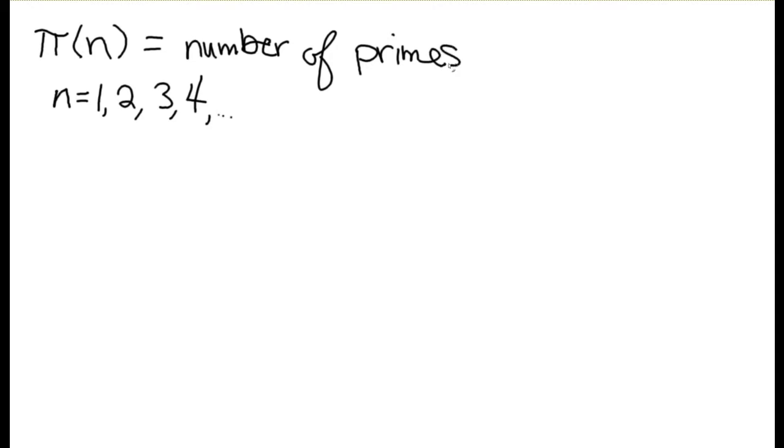So the first topic is a number we'll call pi of n. Pi of n, so n is just going to be some number, so n could be 1 or 2 or 3 or 4, really any positive whole number. So you're going to plug a positive whole number in here, and what you should get out is the number of prime numbers smaller than or equal to n.